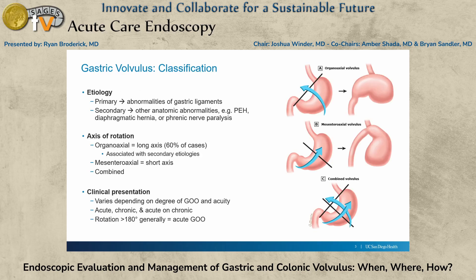Starting with gastric volvulus. There are a couple ways it can happen — primarily in elderly patients with ligamentous laxity that can allow the stomach to twist on itself, but more commonly we see it secondary to paraesophageal hernias or diaphragmatic hernias with stomach in the chest. You have a couple planes on which you can rotate: either the organoaxial plane or the mesenteroaxial plane, or you can have a combined.